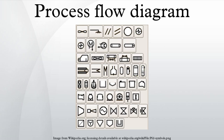Process flow diagrams generally do not include: pipe classes or piping line numbers, process control instrumentation, minor bypass lines, isolation and shutoff valves, maintenance vents and drains, relief and safety valves, and flanges.